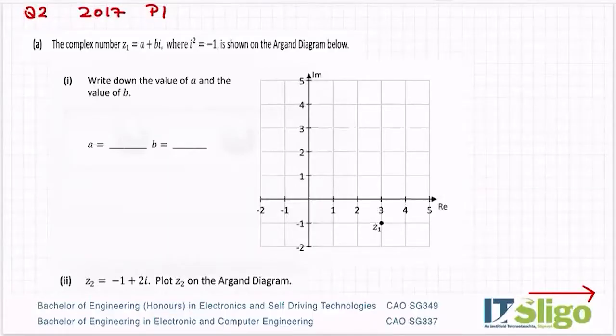The 2017 complex number question was question 2 again. So the complex number z1 is equal to a plus bi where i squared is equal to minus one is shown on the Argand diagram below.